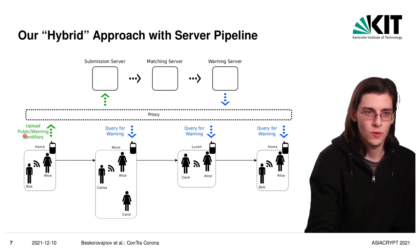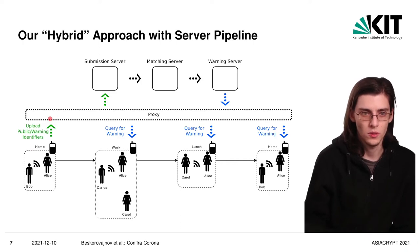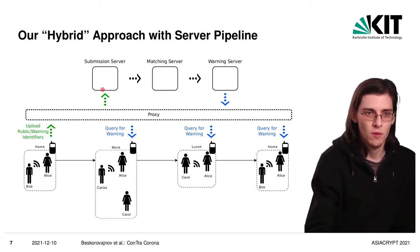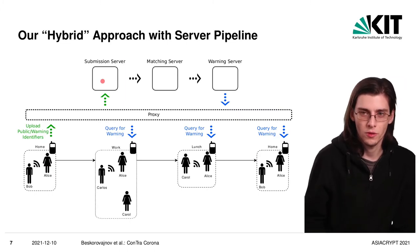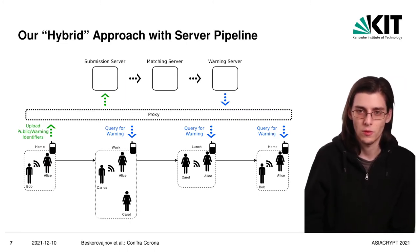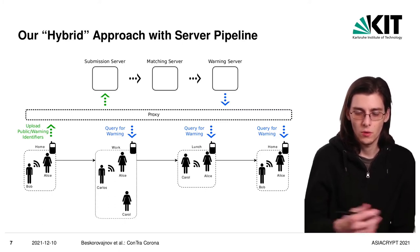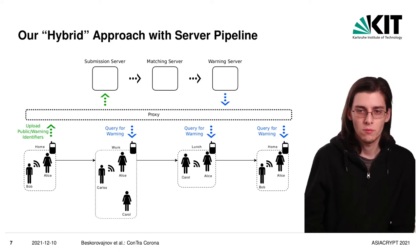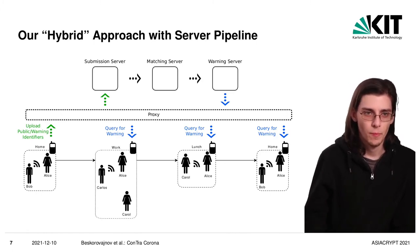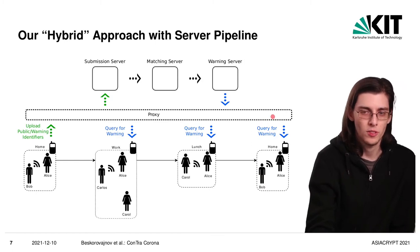And the users in the system would also regularly, once per day, draw a new secret key and then would register them with the submission server. And they would do that through some kind of anonymizing proxy, because that's also something that is overlooked in current applications, that even though all this contact tracing might be pseudonymous, the moment that you interact with the central infrastructure, if you don't take additional precautions, you implicitly leak your IP address and IP addresses can be resolved to natural persons. So we would want some kind of anonymizing proxy here, operated by an independent party.